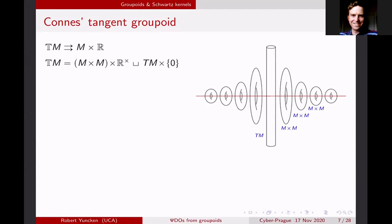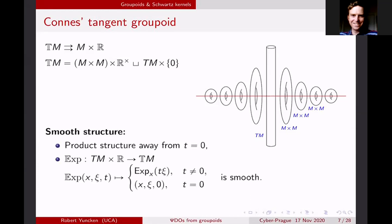The picture I have here is the case where M is a circle. I want to consider these M × M's as being stretched transversely to the diagonal. This red line here is supposed to be the diagonal in M × M, and I'm going to stretch this space transversely to that diagonal. To describe it as a Lie groupoid I need two pieces of information: the smooth structure — the C∞ structure — and then the algebraic groupoid structure. Let's do the geometry first.